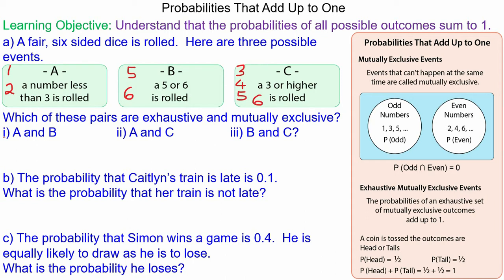So events A and B, for A you can have a 1 or a 2, and for B you can have a 5 or a 6. So they are mutually exclusive in that if one happens or the other happens, but they're not exhaustive.